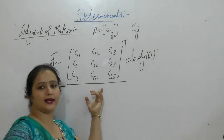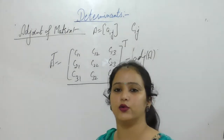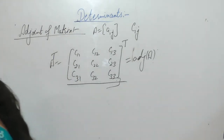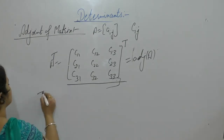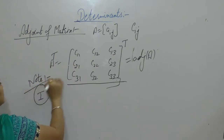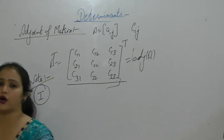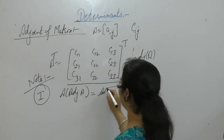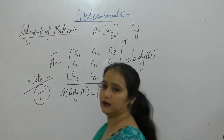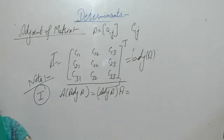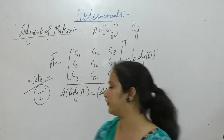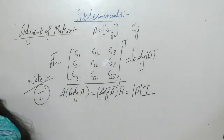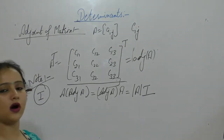So what is the adjoint of a matrix? If we have any matrix, first we have to find the cofactors of that matrix, then take the transpose of the cofactor matrix. Some remarks: if A is a square matrix of order N, then A into adjoint of A is equal to adjoint of A into A, which equals determinant of A times I, where I is the identity matrix of the same order N.